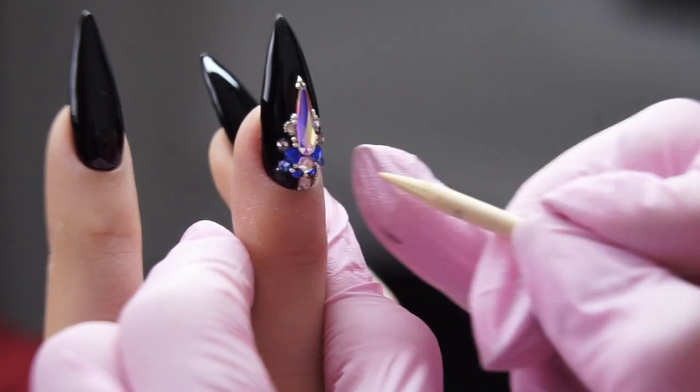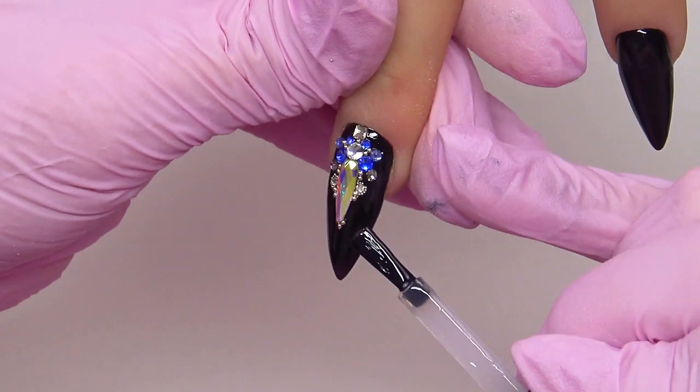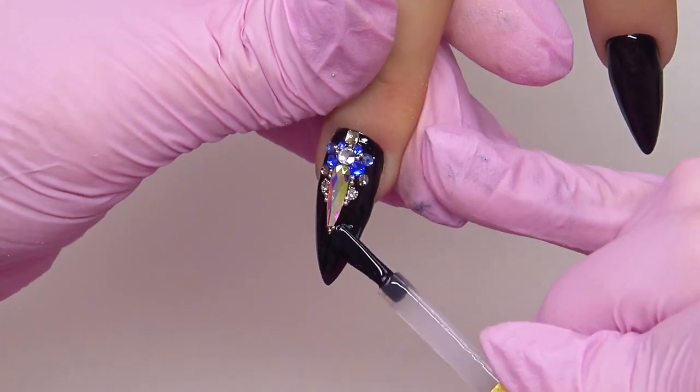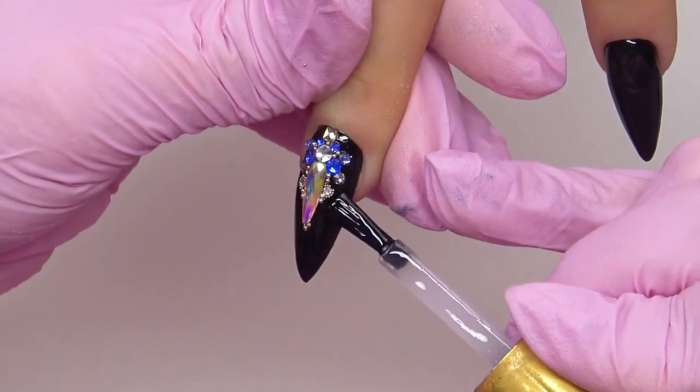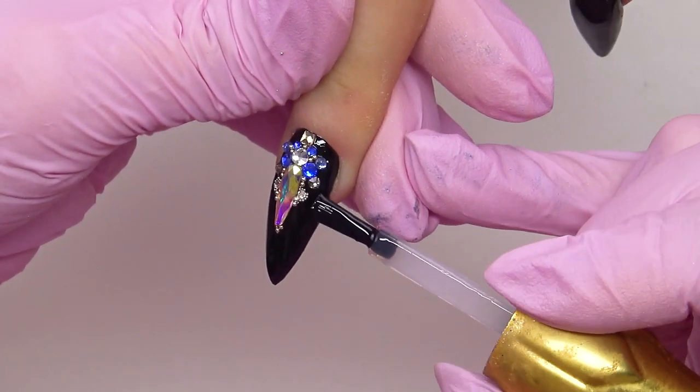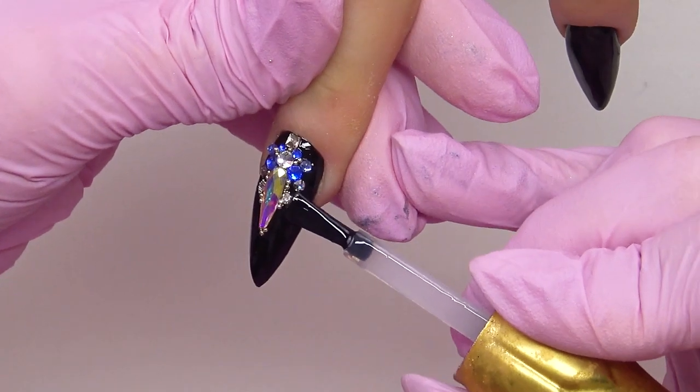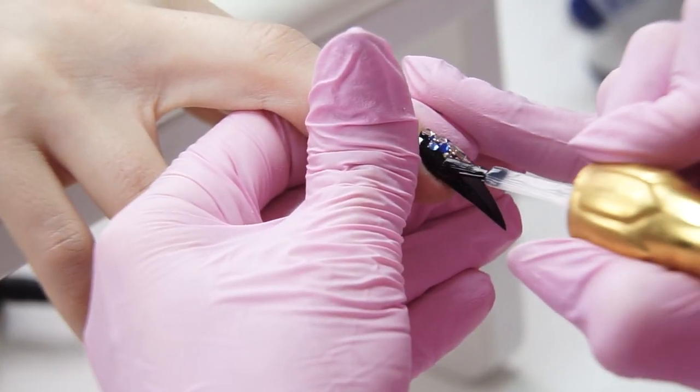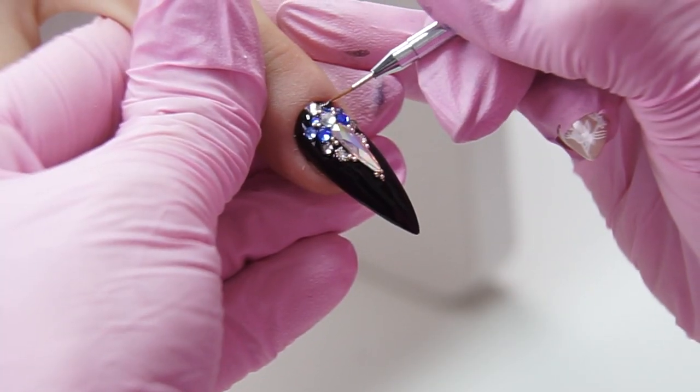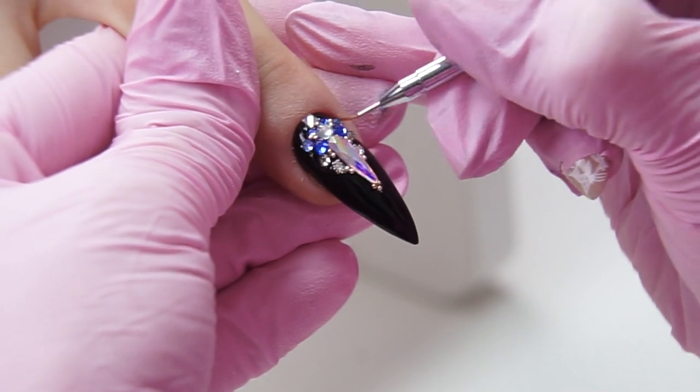Now I will tell you how to top it off. It's important not to cover up the stones so we could see their edges. Apply it really tight. If you get on the caviar beads, that's totally fine. They have no edges and don't shine that much. I'm using a thin brush in the areas that are hard to reach.